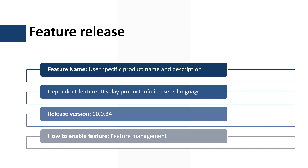The user specific product name and description feature is available since application version 10.0.34 and it depends on another feature, display product info in user's language, so that must be enabled first. Both features are managed by the feature management workspace.